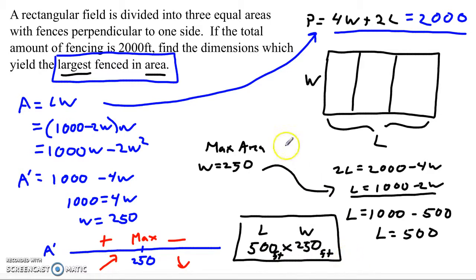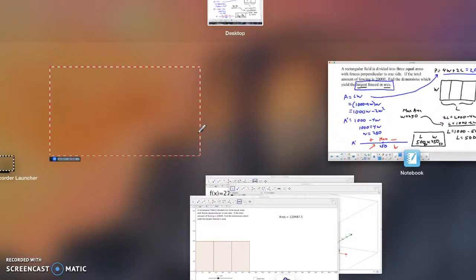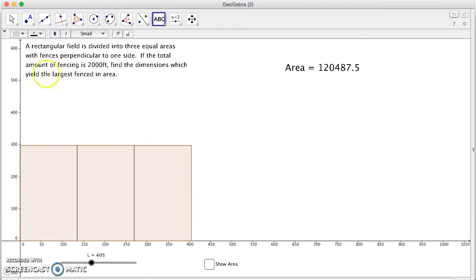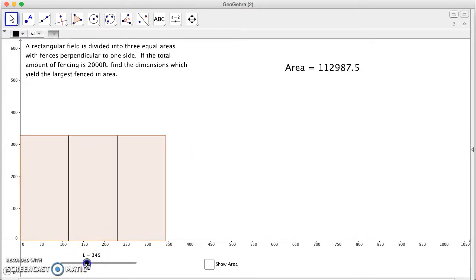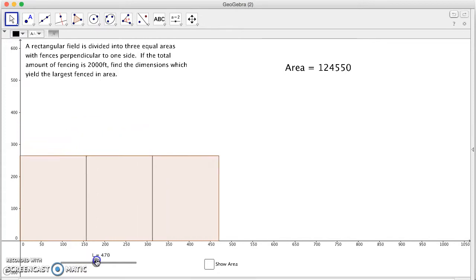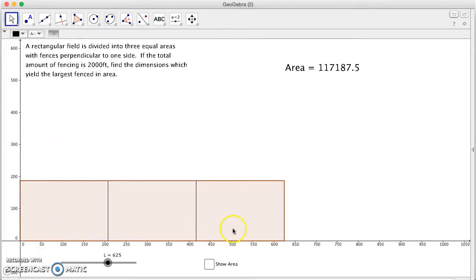I've got a quick little animation to just kind of show you what this looks like. So if we take a look over here, we've got the situation. We've got the rectangular field divided into three areas, and down here you see I have this little slider. And so as I move this along, you see it changes the dimensions of the field.